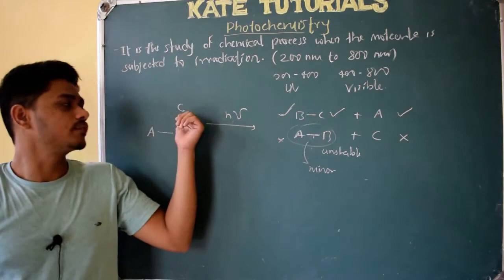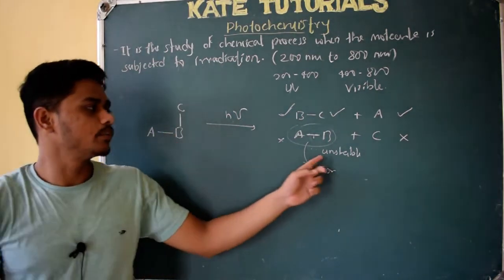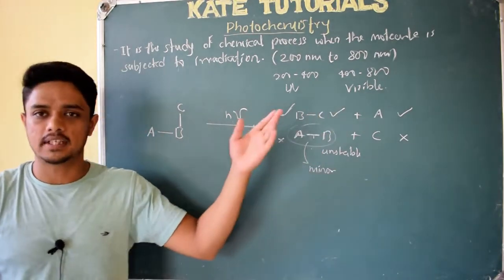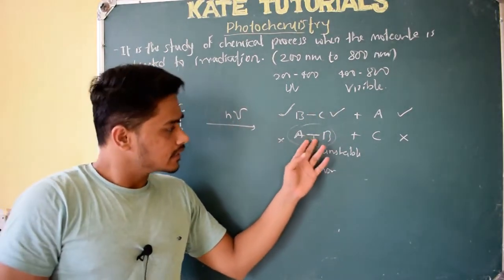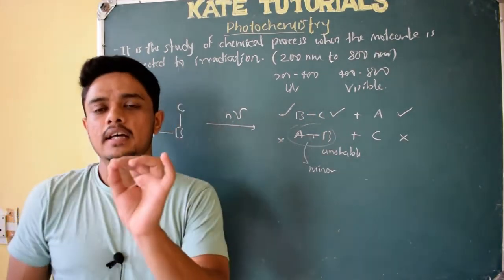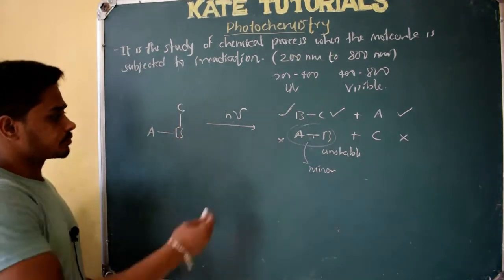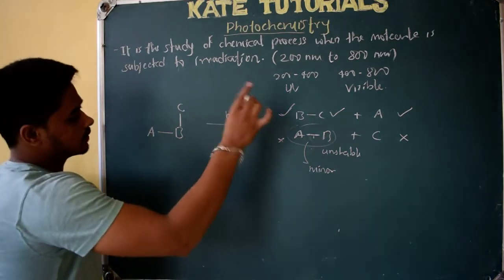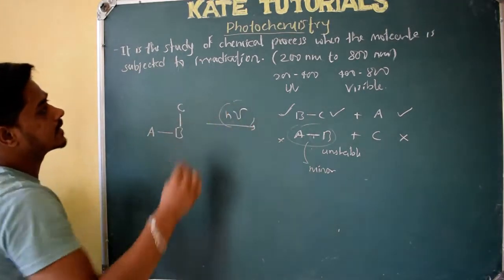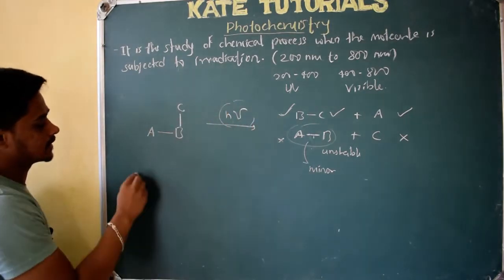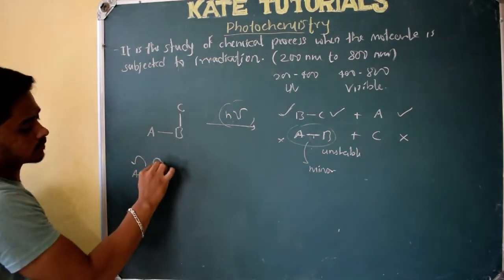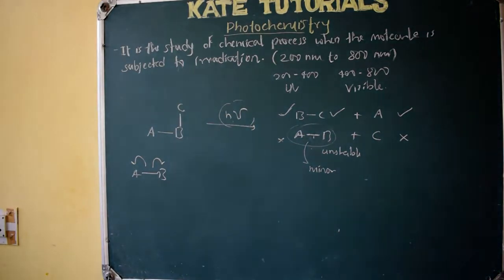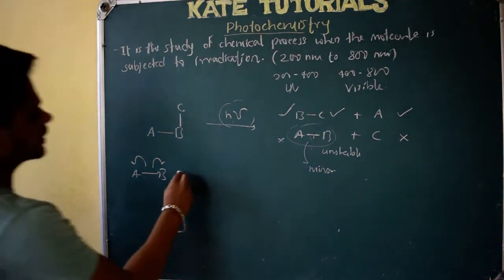To summarize: one possibility is that one bond is stronger and the other is weaker. The second possibility is that the other product formed is unstable, so we get this product as major. The third possibility is that the other product is formed but in less or minor quantity. Whenever we apply photochemical conditions, you should always remember that it is going to cleave homolytically, and we will get radicals.